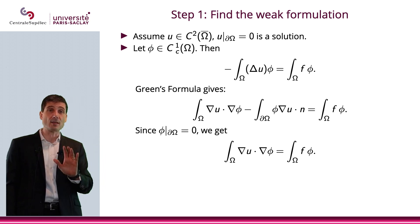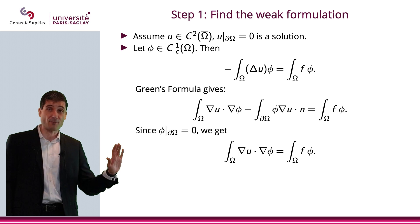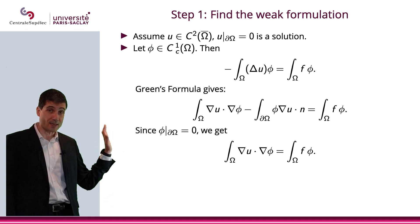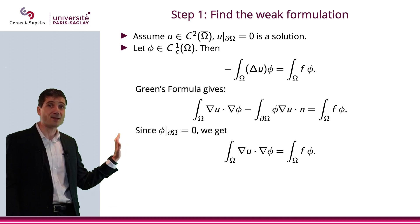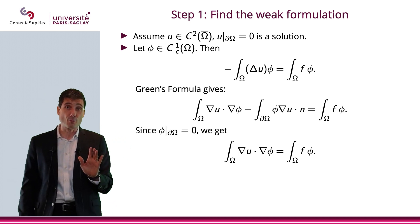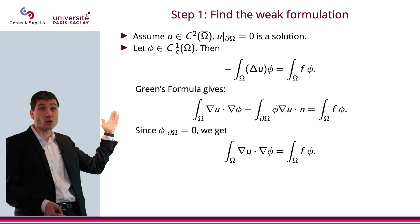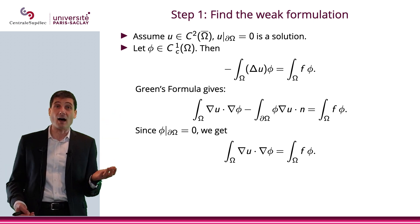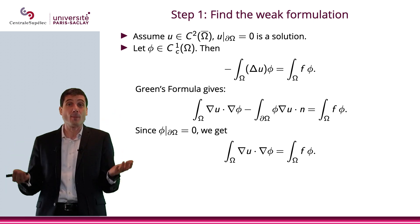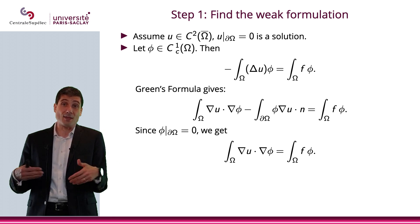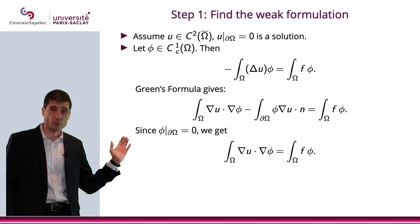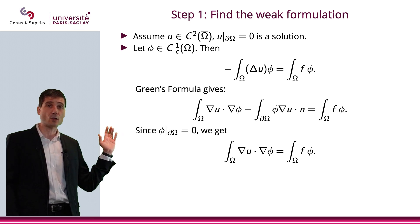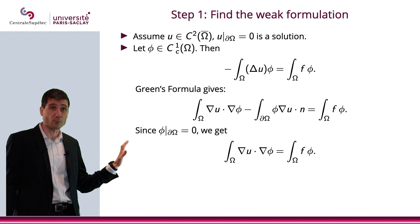Now that I have this, I write this on my piece of paper, and I'm going to start the proof using this formulation. That first step is not part of the proof for a very simple reason: I cannot assume u is in C^2 because if I already know that u is in C^2, I don't have anything to prove. I'm just going to use this to start the proof now. So the proof starts now.